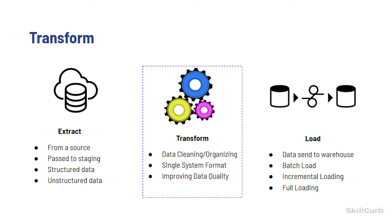Transformation: The data cleaning and organization stage is the transformation stage. All of that data from multiple source systems will be normalized and converted to a single system format, improving data quality and compliance. During the transformation stage, data may undergo any of the following operations: cleaning, filtering, joining, sorting, splitting, deduplication, and summarization.